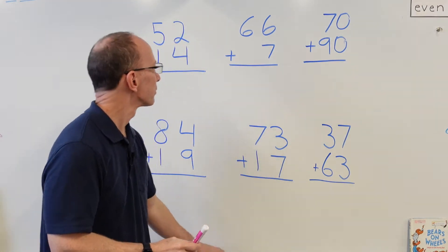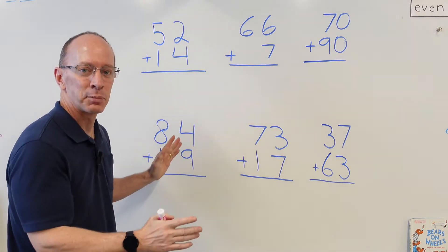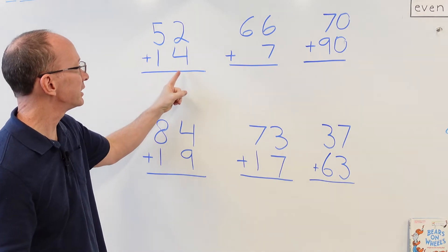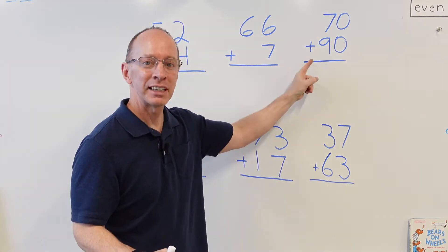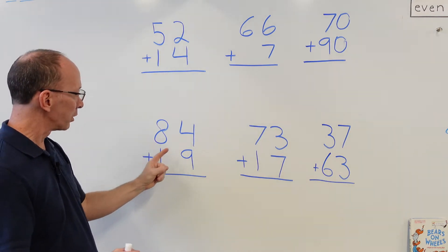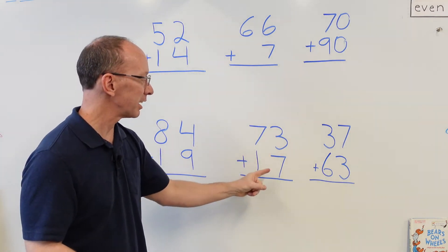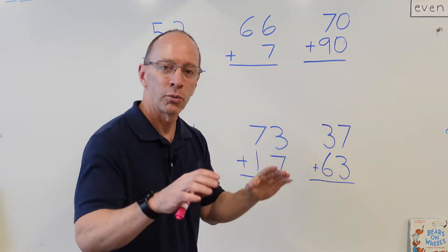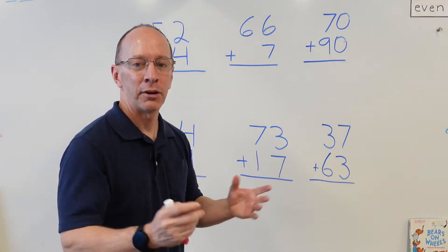Let me go get a marker. I think I'm going to use this color right here. What I want you to do is do these six problems, write them on a piece of paper. You have 52+14, 66+7, 70+90, 84+19, 73+17, and 37+63. So write those out in your math journal.